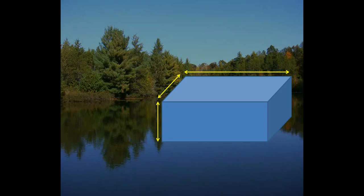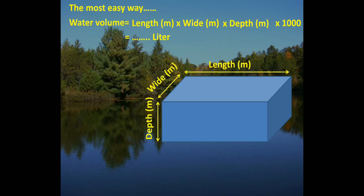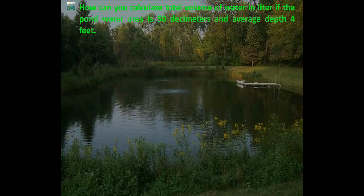Dear viewers, today's video is about how to calculate the total volume of water in a pond in liters — the easiest way. Water volume equals length (in meters) multiplied by width (in meters) multiplied by depth (in meters) multiplied by 1000, giving the result in liters. This figure indicates length, width, and depth.